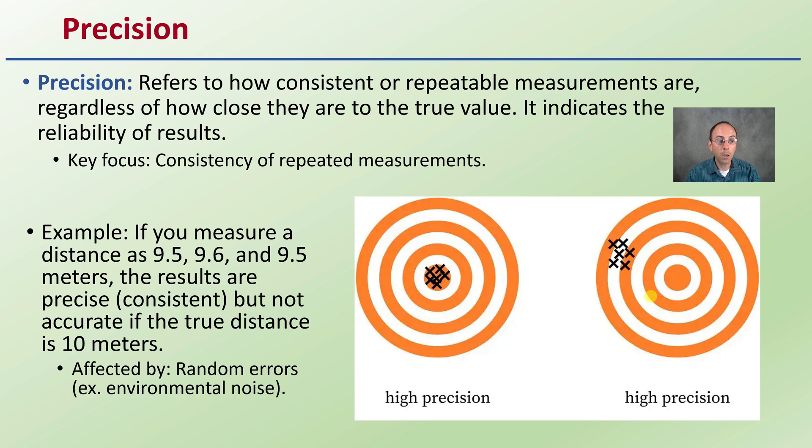For example, if you measure a distance as 9.5 and 9.6 and 9.5 again meters, the results are precise. They're very consistent. But this is not necessarily accurate if the distance was 10 meters as I used in the previous example. Random errors such as environmental noise might contribute to this inaccuracy.